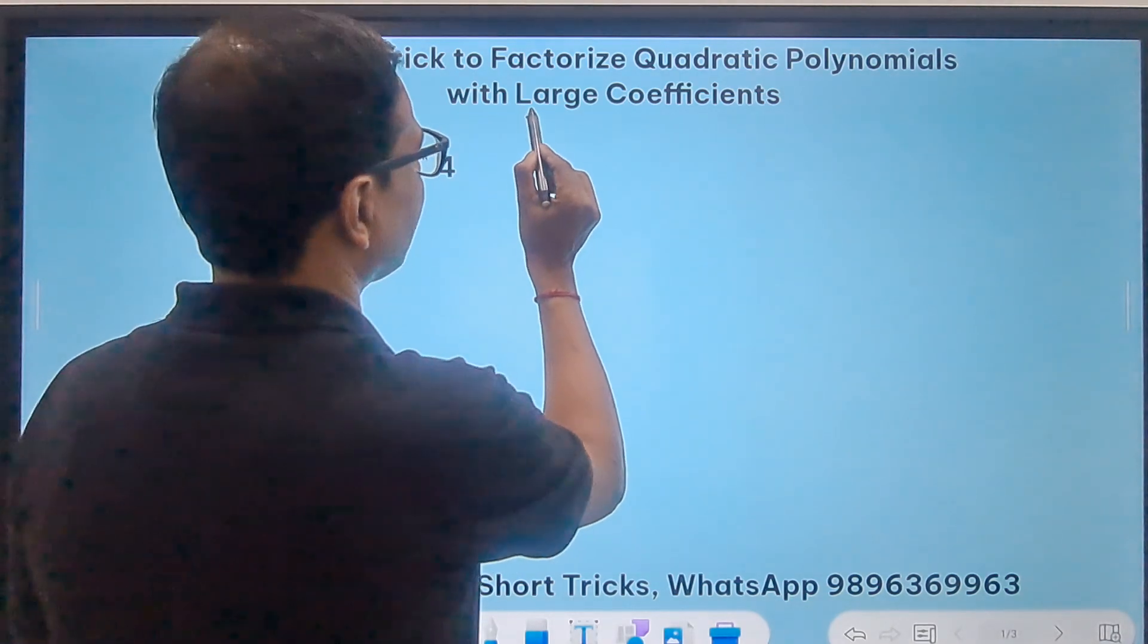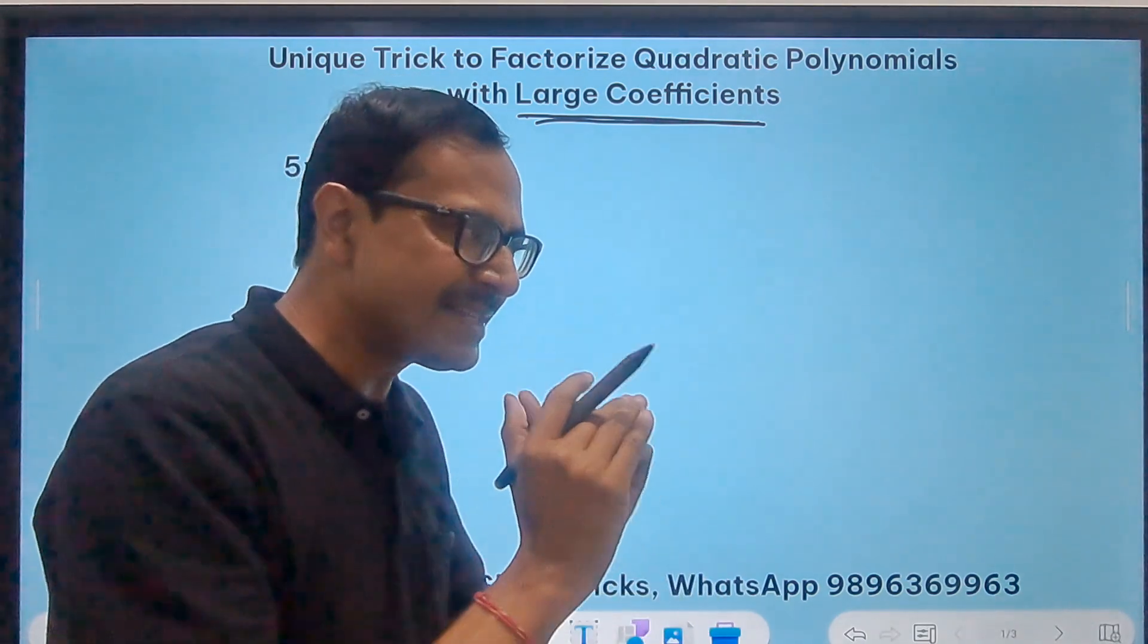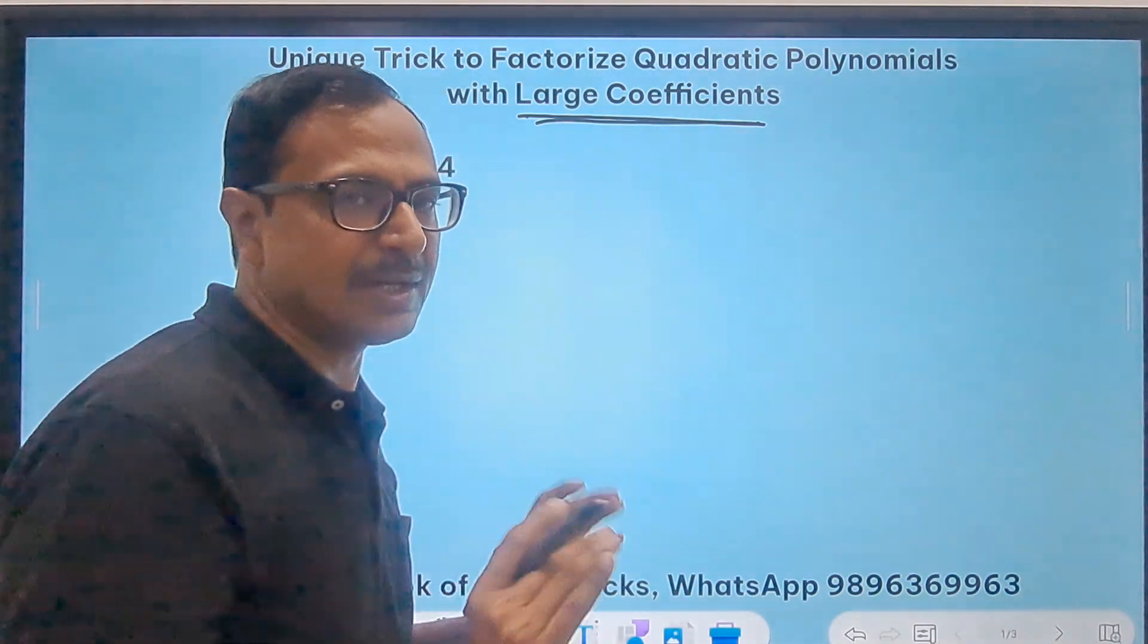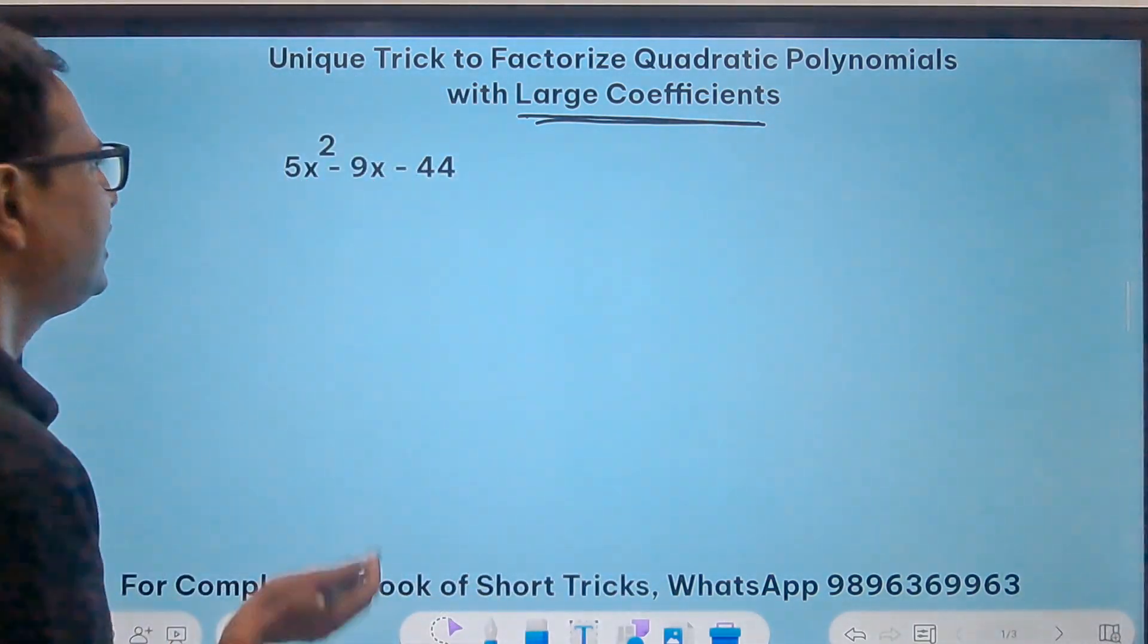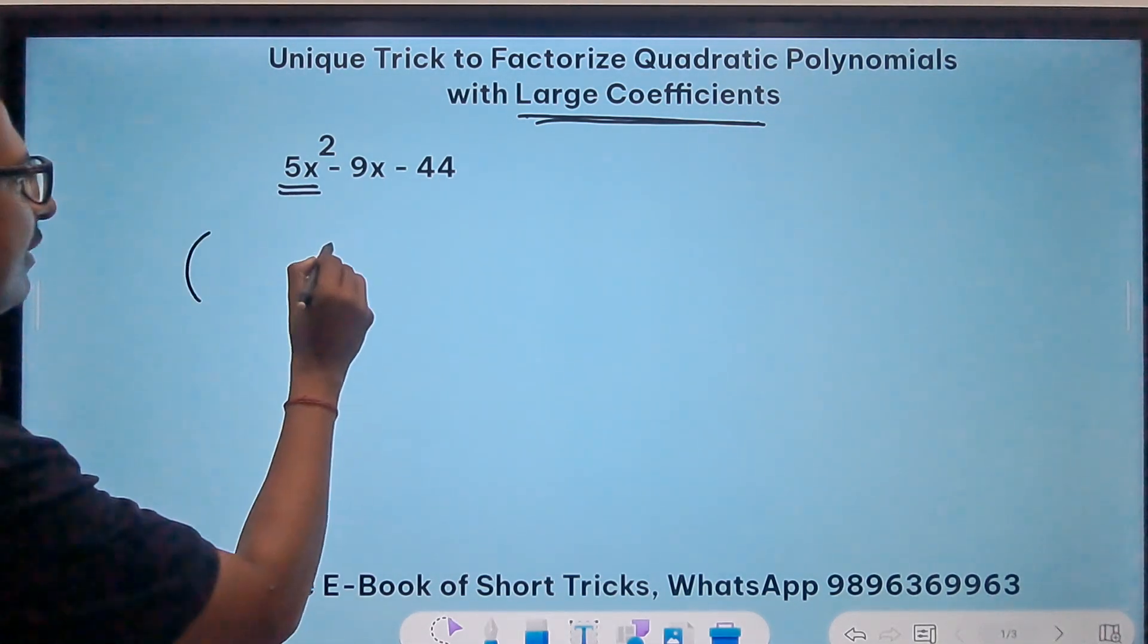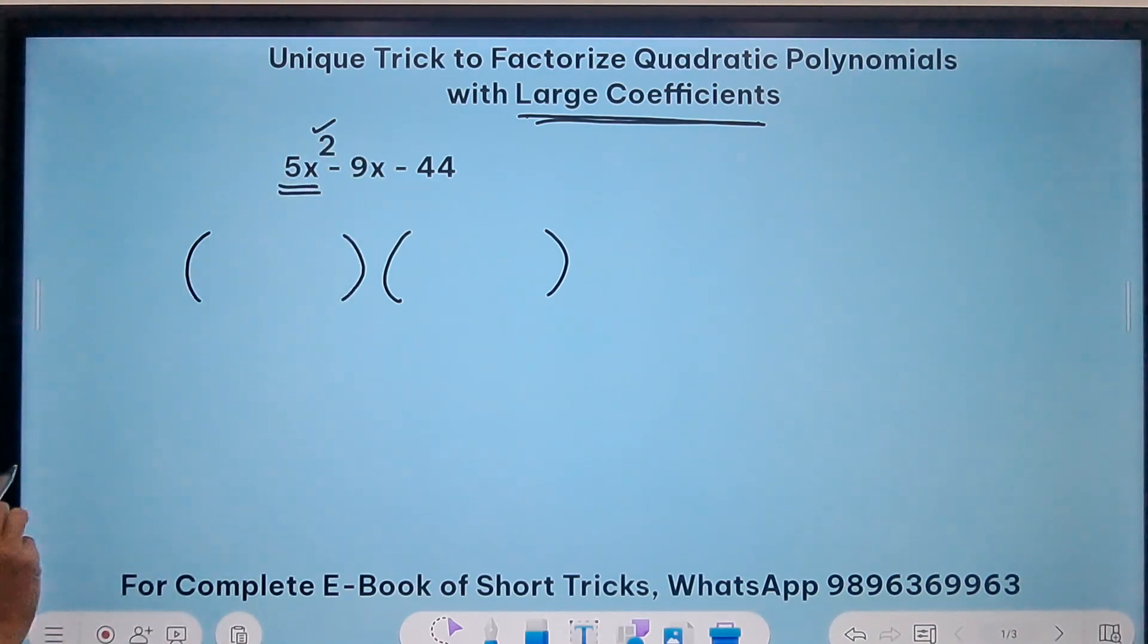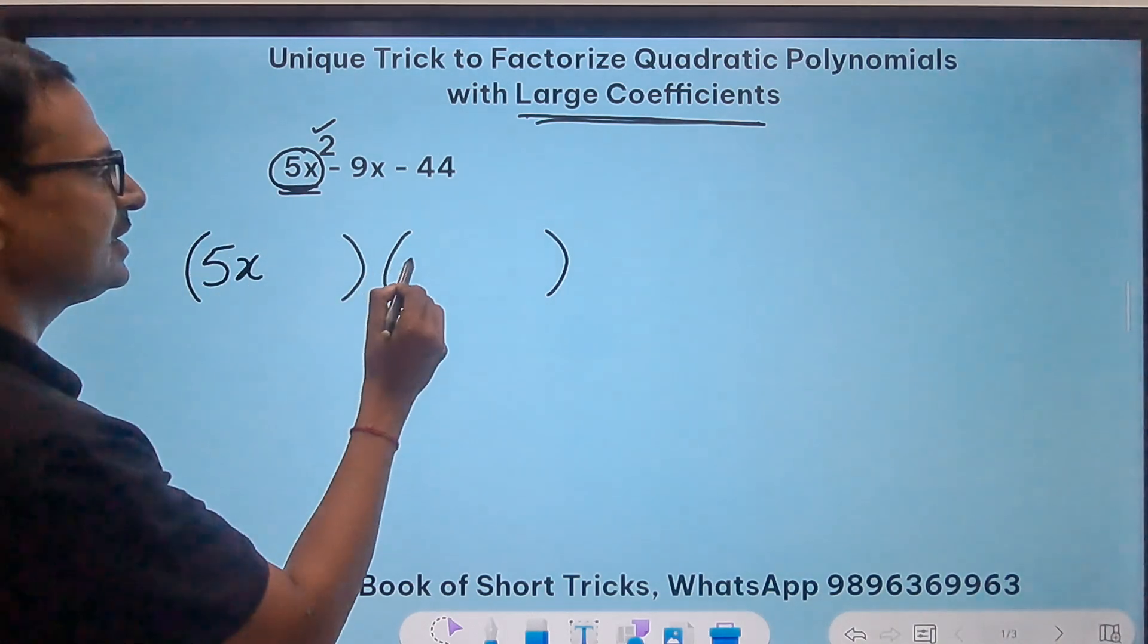The first thing is the coefficients are very large and middle term splitting is difficult. So let's simplify the middle term splitting process first. Before that I'll tell you one step which will help you in factorization in just one, two, two steps that's it. See here we have 5x square. So the first thing I am going to do is have two factors in the brackets, and both the factors just ignore this square here, you have a 5x. So I'll write a 5x here and a 5x here.